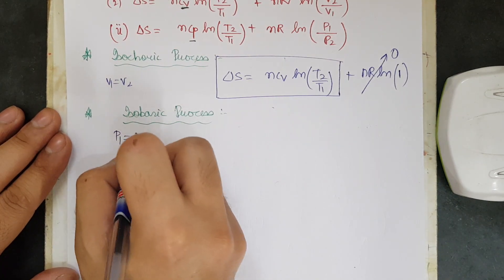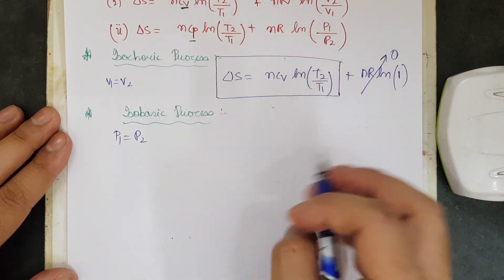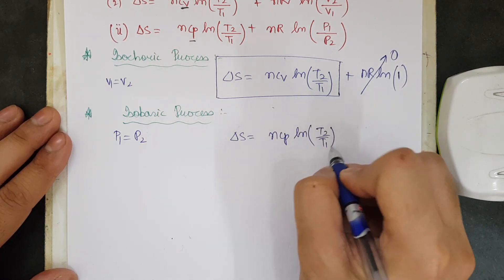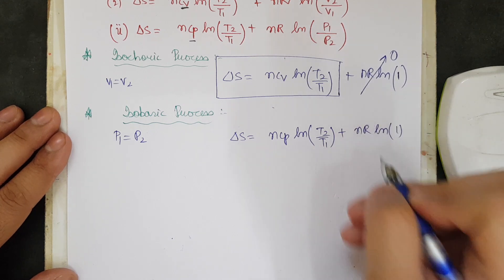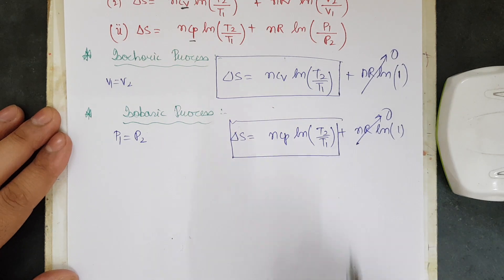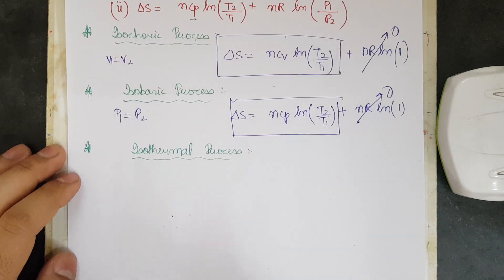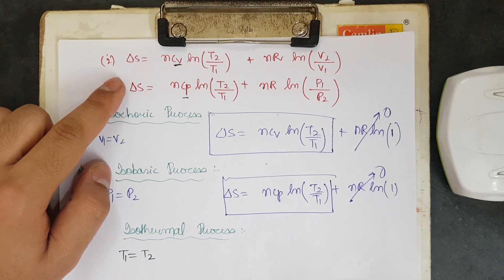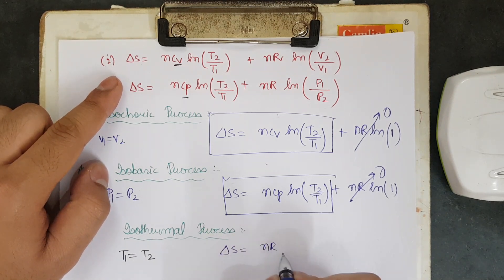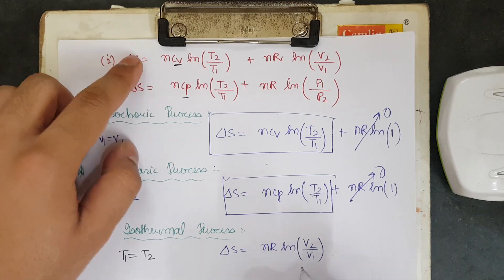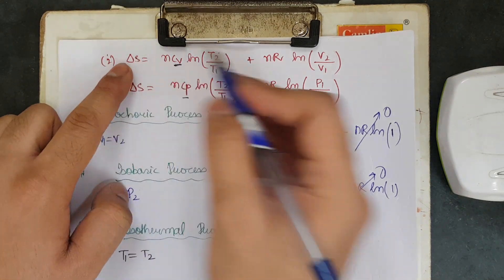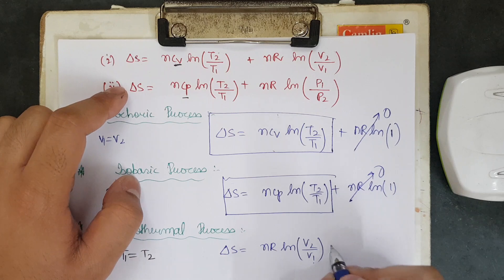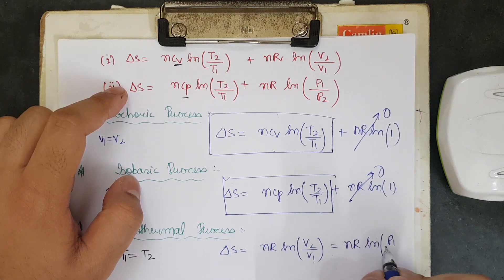For isobaric processes, P1 equals P2, so using the second equation, ln(P1/P2) becomes ln 1 equals 0. Therefore delta S equals NCP ln(T2/T1). For isothermal processes, temperature is constant so the temperature terms vanish, giving delta S equals NR ln(V2/V1), which can also be written as NR ln(P1/P2).